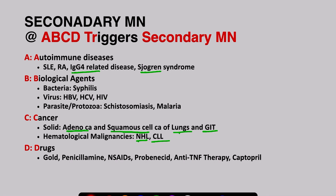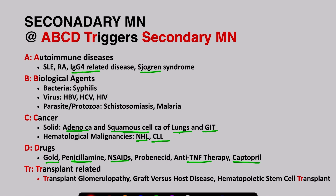D is for drugs. Drugs which can cause membranous nephropathy include gold, penicillamine, NSAIDs, probenecid, anti-TNF therapy, and captopril. Additionally, secondary membranous nephropathy can occur in transplant patients, such as in transplant glomerulopathy, graft-versus-host disease, and in patients with hematopoietic stem cell transplantation.